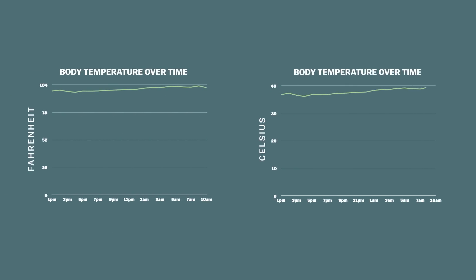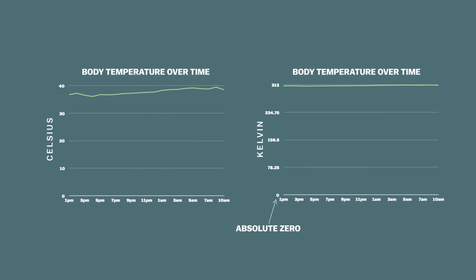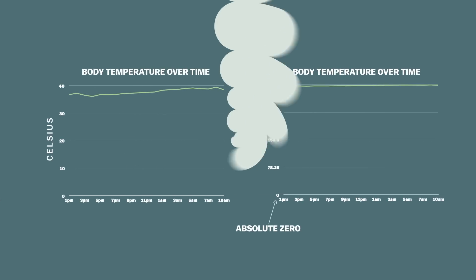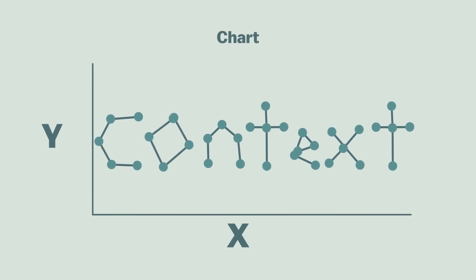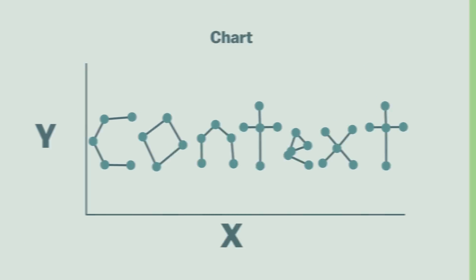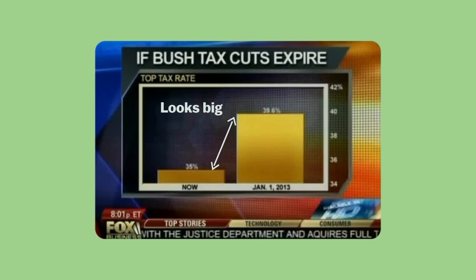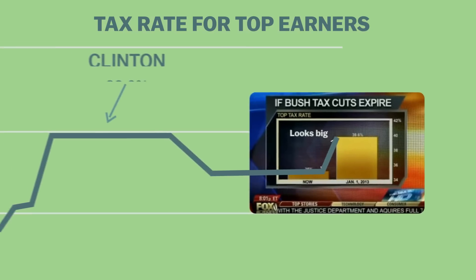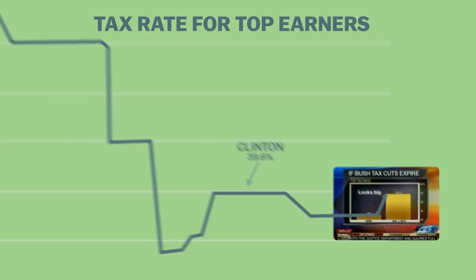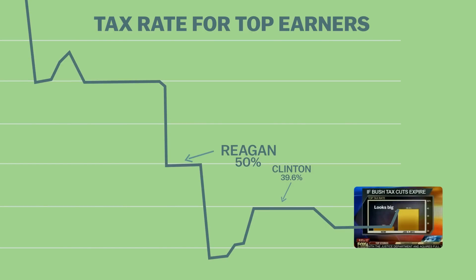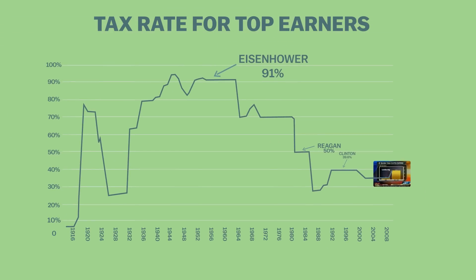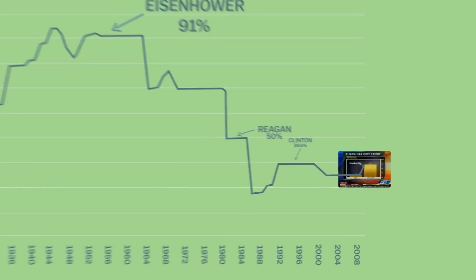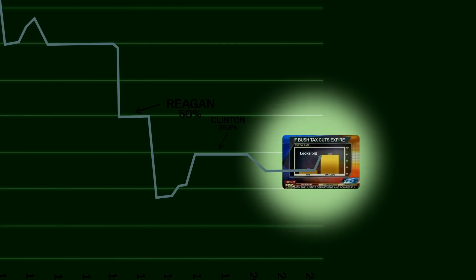But if you switch to Kelvin and extend everything to absolute zero, then your charts become useless. When people are really lying with charts, the main thing they're normally doing wrong is leaving out the context, not leaving out the zero. Go back to that Fox News chart — you'd never know from it that the top marginal rate was 39.6% back in the Clinton administration, or that in the Reagan administration it was 50%, or that back when Eisenhower was president it was 91%. The missing zero was really the last of that chart's problems. What they left out was the entire history of taxes in the United States.